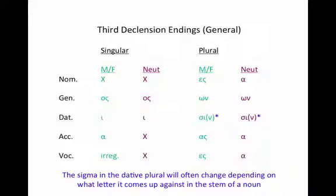The neuter follows a similar pattern. The nominative singular of the neuter is unique. The genitive ending is -os, the dative -i, and the nominative repeats for the accusative and the vocative. In the plural, the nominative plural ending for the neuter is -a, genitive -on, dative -si with the movable nu, and again the nominative repeats for the accusative and the vocative. With the neuter, we're also going to see that the dative plural ending — the sigma will butt up against consonants and change, drop, or remain the same depending on what the consonant is.